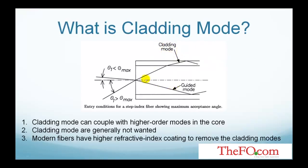If the fiber is a multimode fiber, then cladding modes can couple with and get power from higher order modes of the core, resulting in increased loss of the core power. That is why cladding modes are generally not wanted.